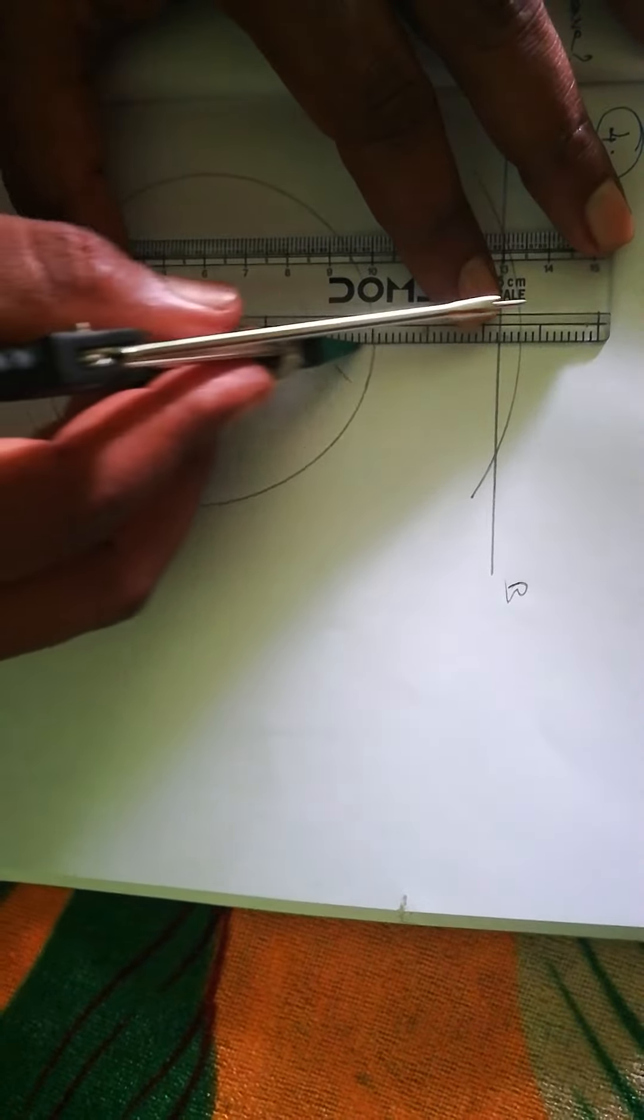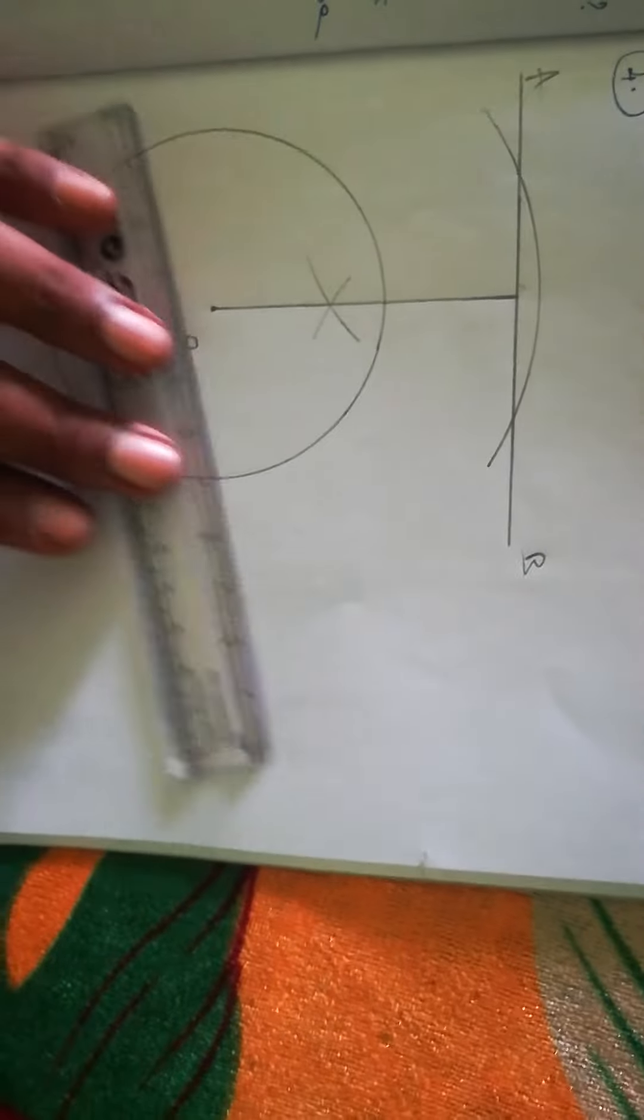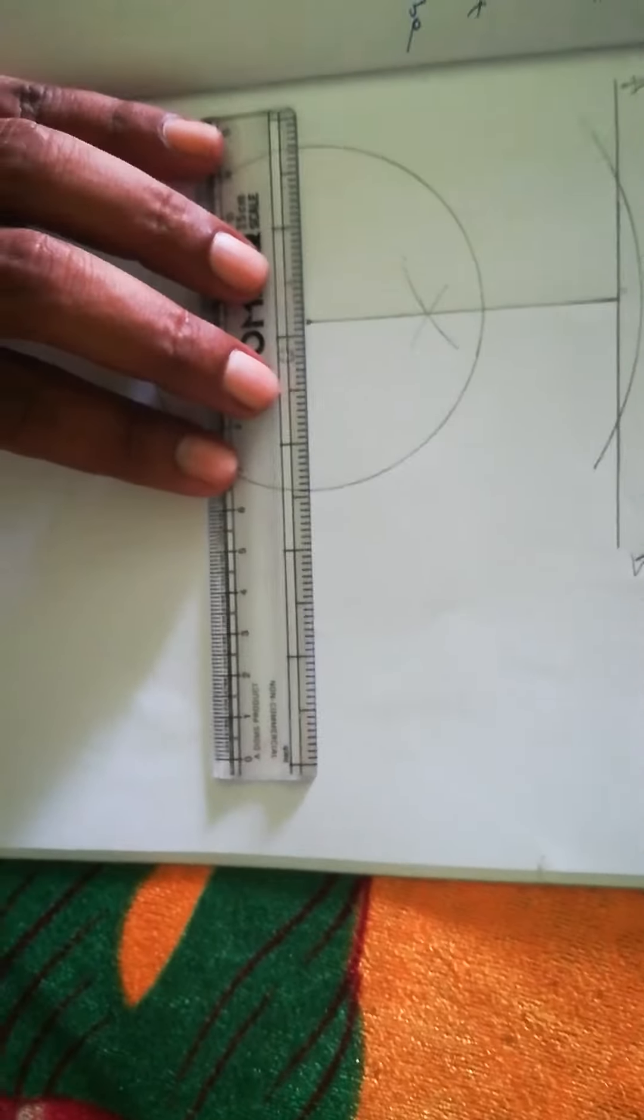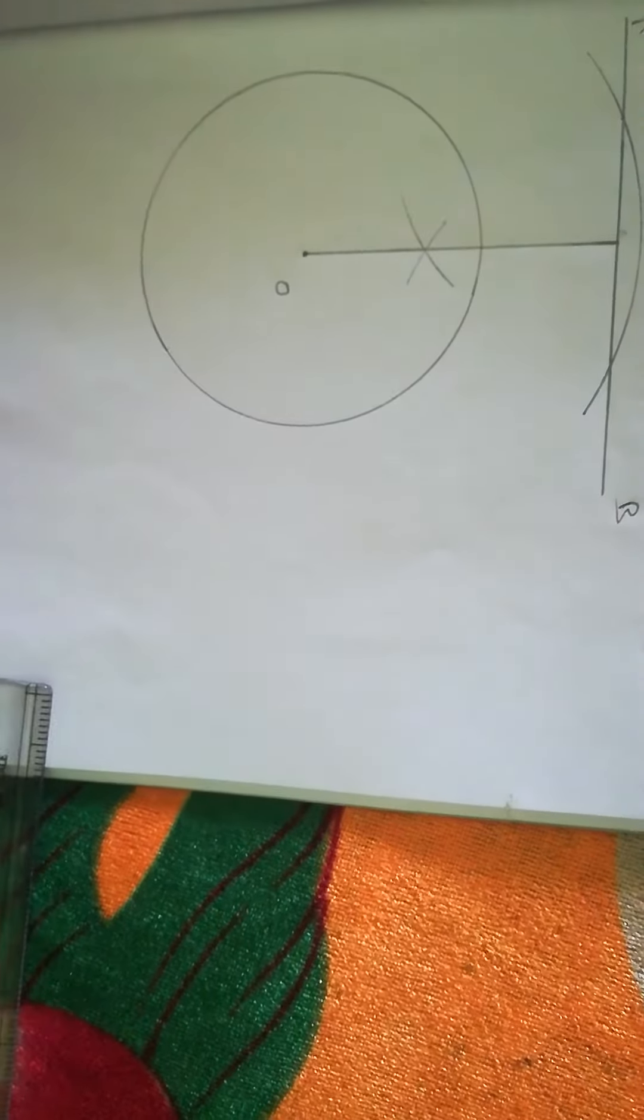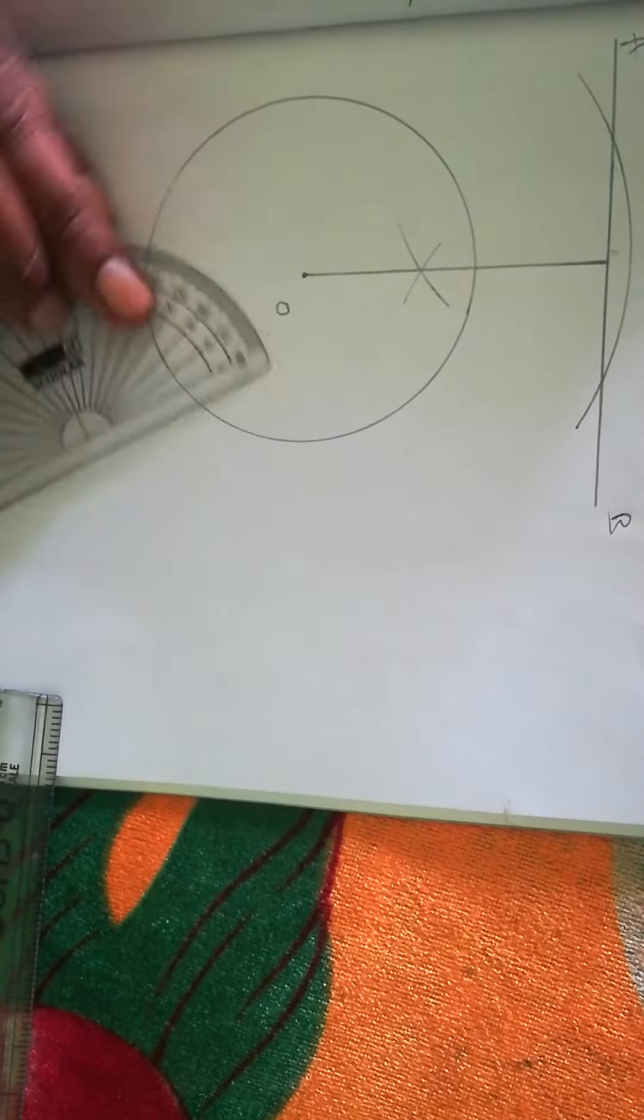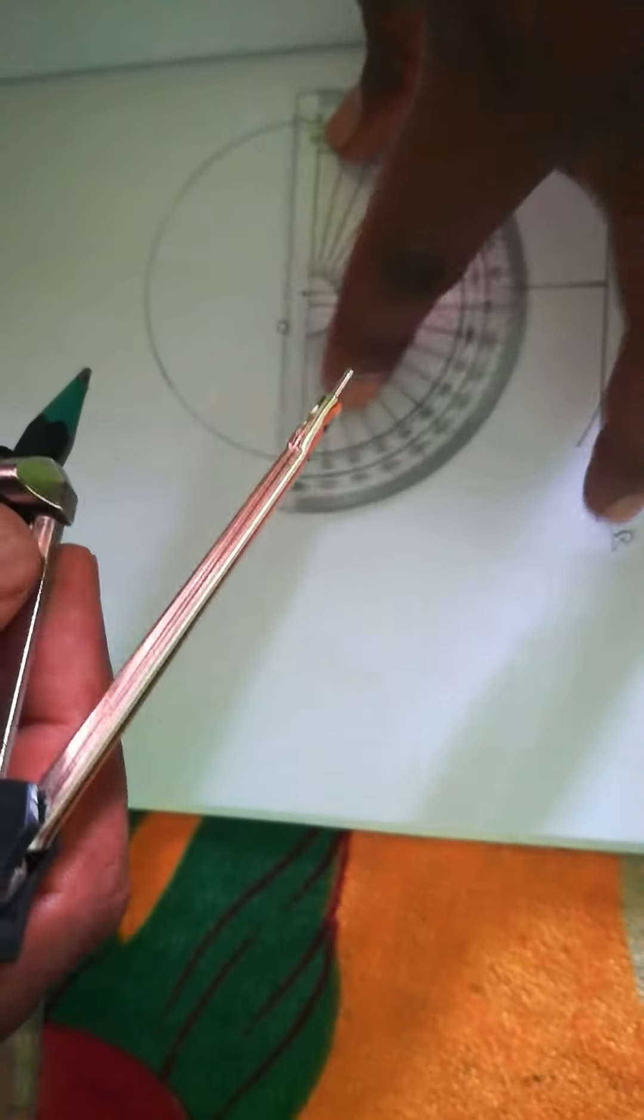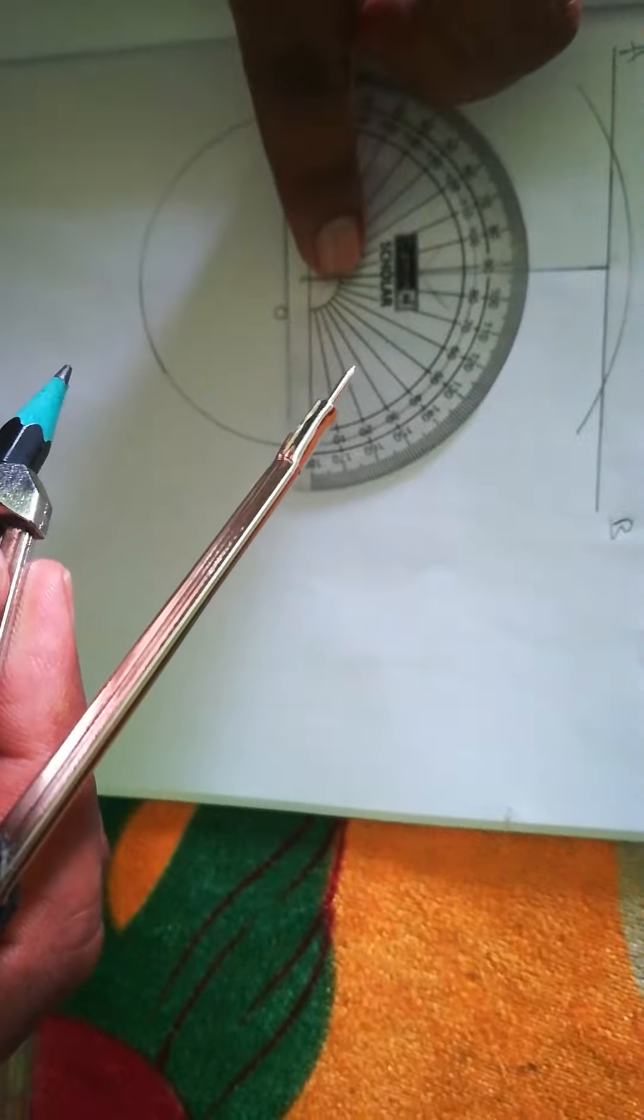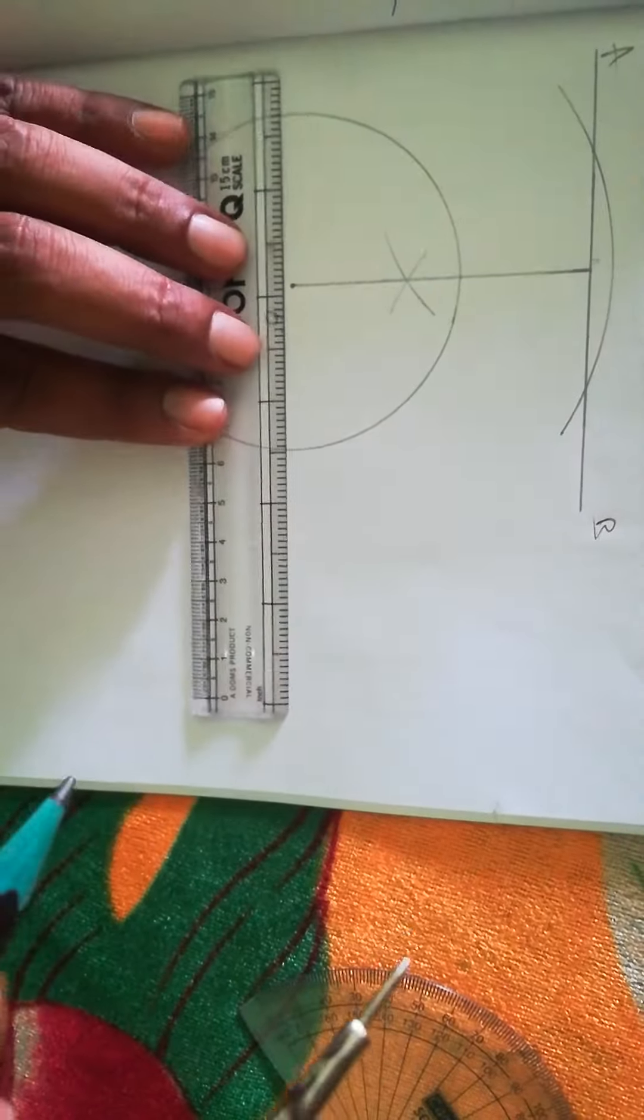From O you draw a straight line, take a 90-degree line. You can use a compass also. You can use the protractor. It's a 90-degree straight line. You can just take it, ensure, and just draw a straight line.